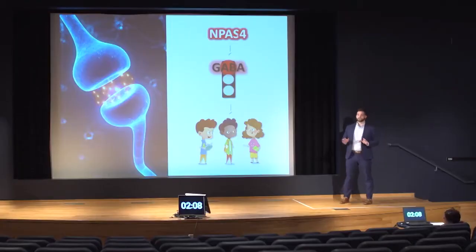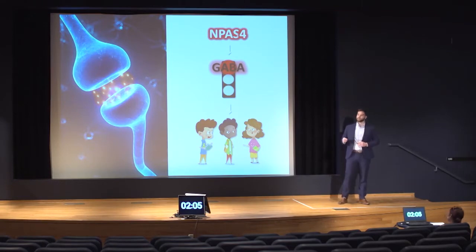They do this by communicating at little junctions called synapses. An example of a synapse is shown on the left side of the screen. Think about the brain like a road map of a big city and each of these synapses like an intersection with a traffic light. Just as traffic lights signal stop or go to control the flow of traffic, these synapses can send either positive or negative signals to control the flow of information across brain cells.